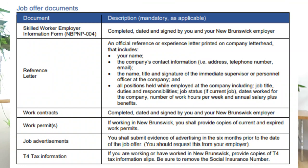Next are the job offer documents — these come from the employer supporting your application in the NBPNP program. Those documents include the Skilled Worker Employer Information Form, or NBPNP 004, which needs to be completed, dated, and signed by you and your New Brunswick employer. Reference letters should show your name, the company's contact information, the name, title, and signature of the immediate supervisor or personnel officer, and all positions held while employed, including job title, duties and responsibilities, job status, dates worked, number of work hours per week, and annual salary plus benefits. Also required are work contracts, your work permit, the job advertisement for your position, and the T4 tax form information.